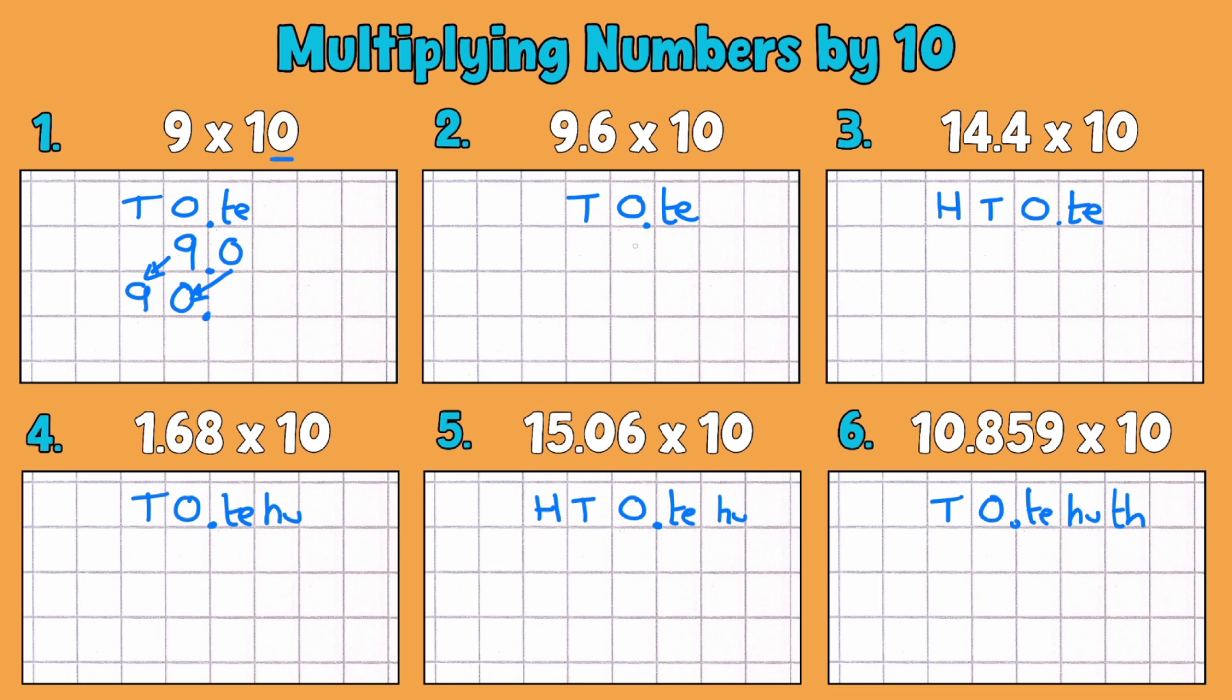So let's have a look at 9.6. So we'll write that number in. Now making that 10 times larger, I'll put my decimal place in and we can do the exact same thing again to make it 10 times greater. So my 9 jumps over to make it 90 and my 0.6 jumps over one to make it 96. So I've got 96 or 96 and no tenths, 96.0.